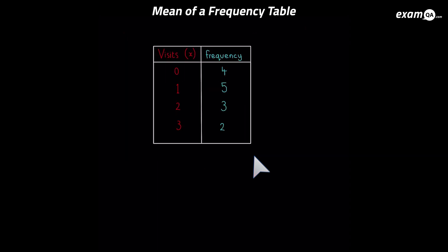Now let's look at a frequency table. So what does this frequency table mean? So here we've got number of visits to the doctor in a year from a sample of people. They've either had 0, 1, 2 or 3 visits. Now what does this frequency mean?